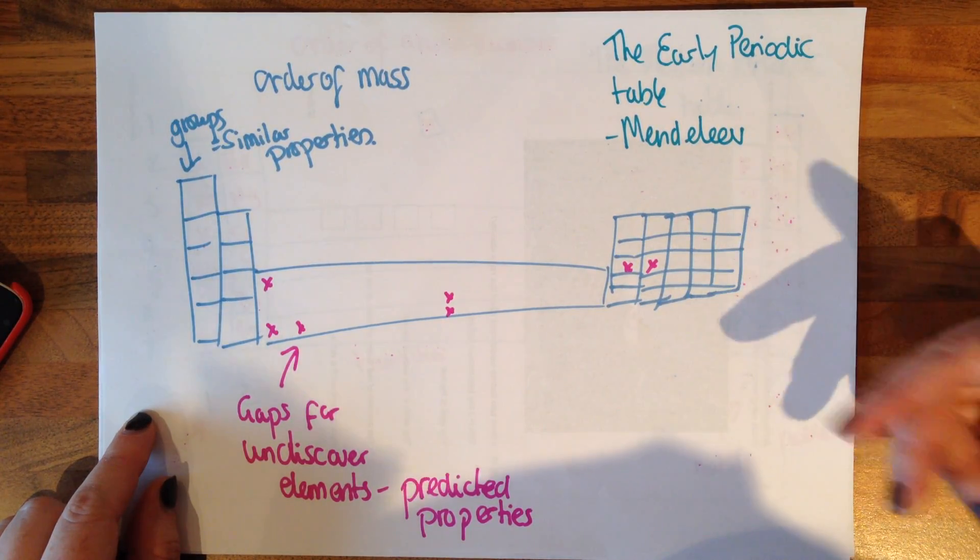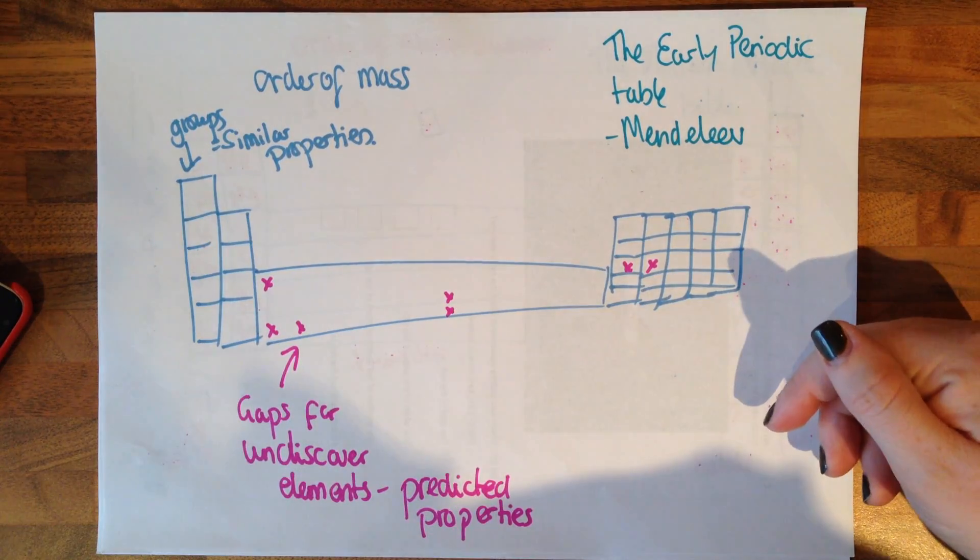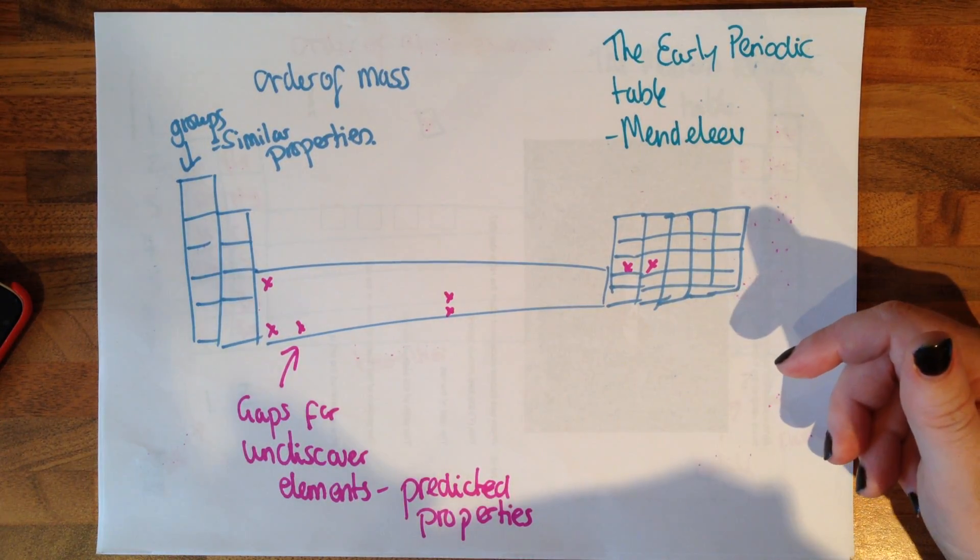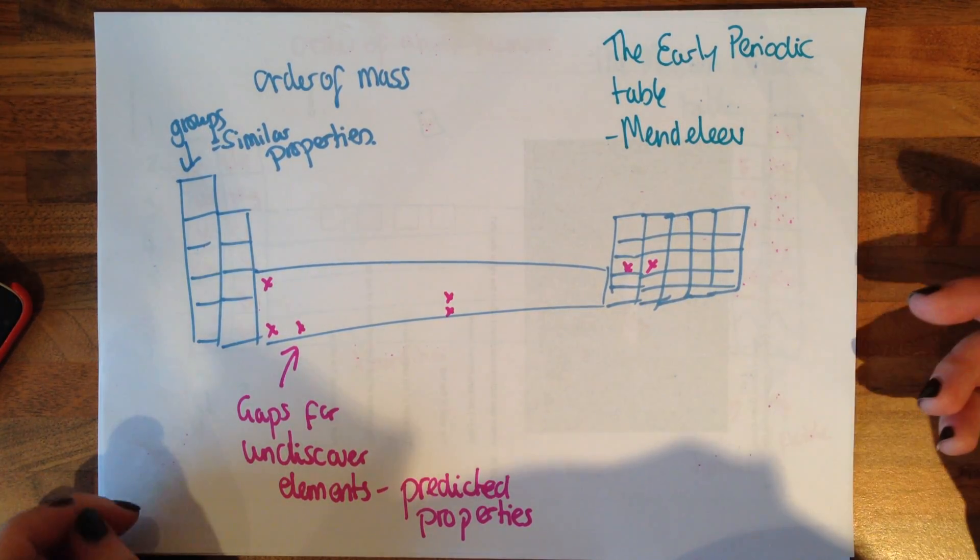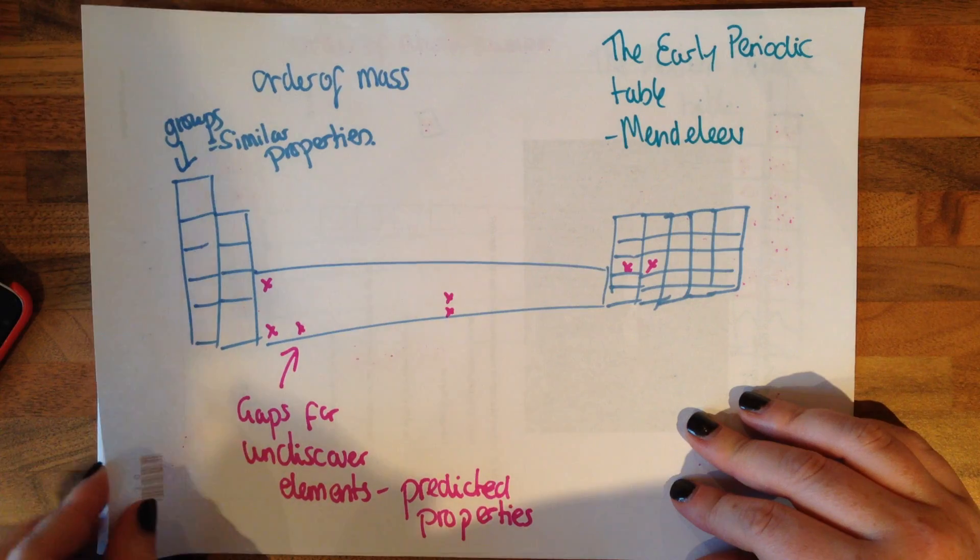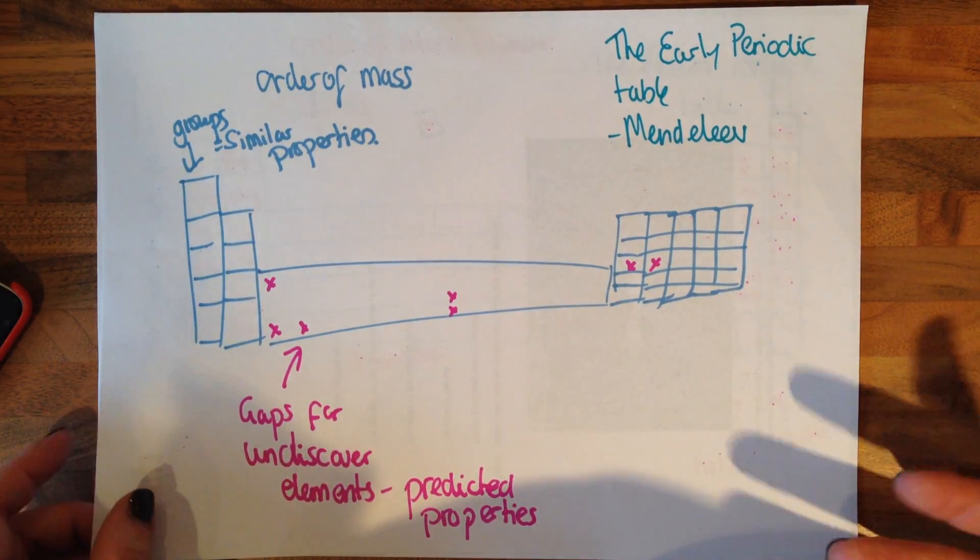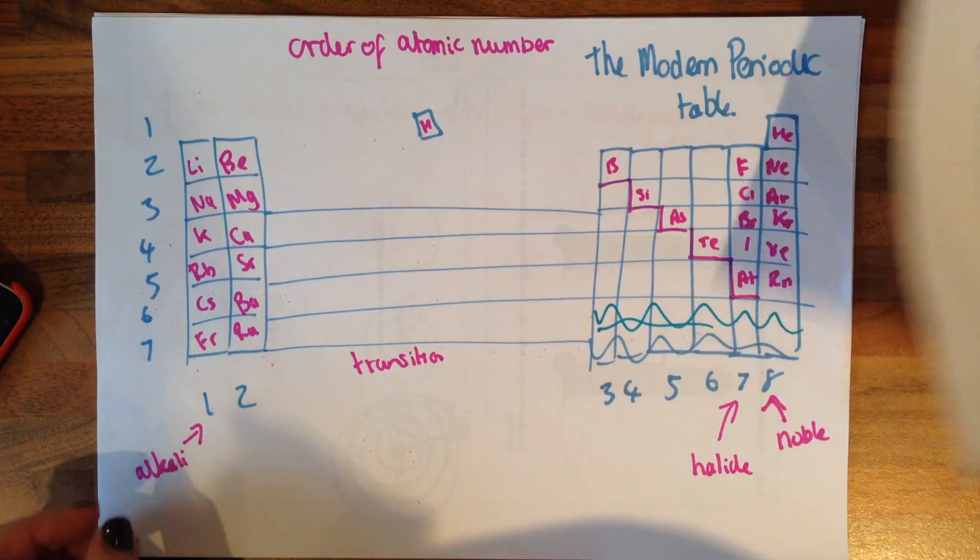And these were the undiscovered elements. And he predicted the properties of these undiscovered elements. This was a really key thing that Mendeleev did. And these two in here, Germanium and Gallium, when they were discovered, he was proved right that the properties he predicted these elements actually did have.